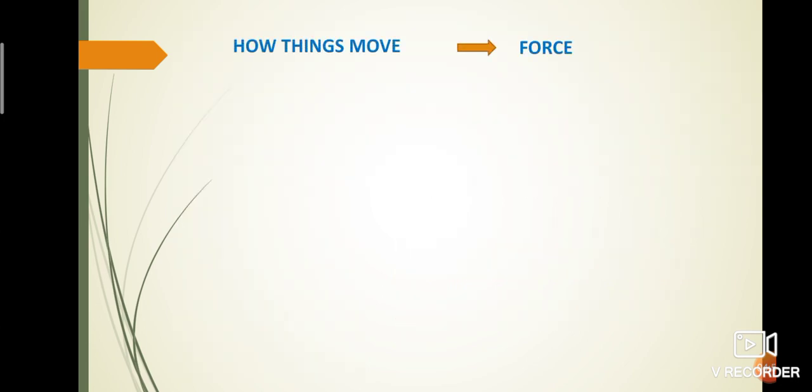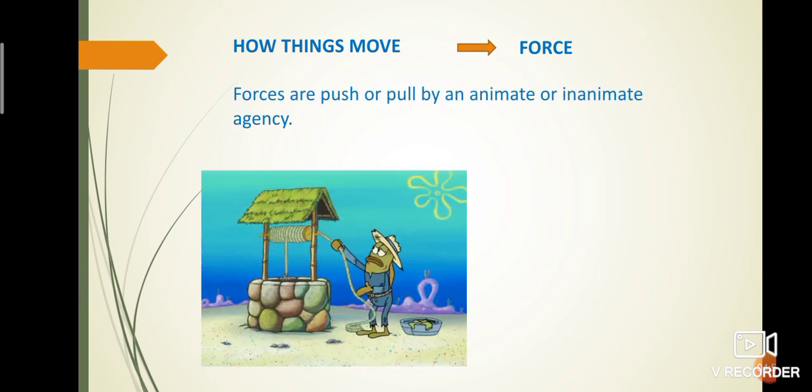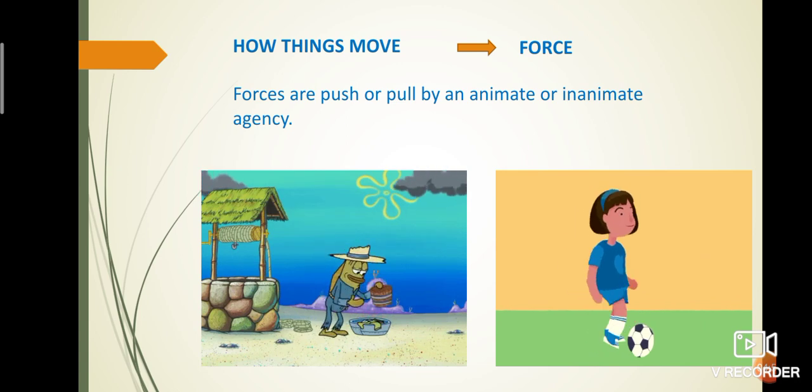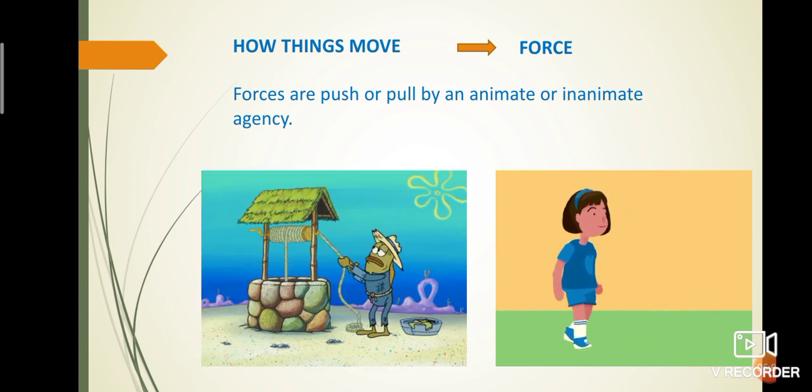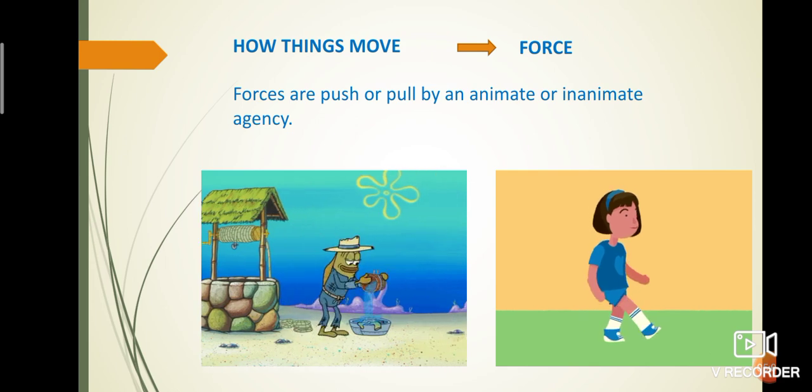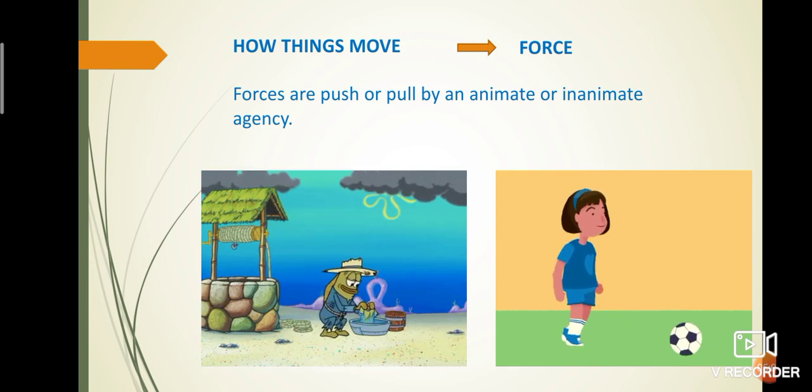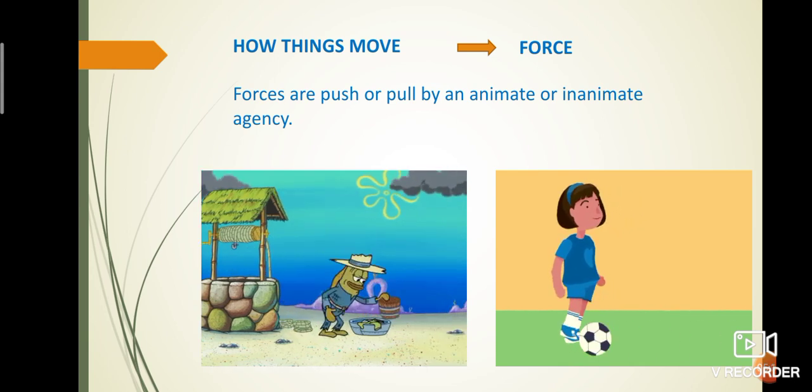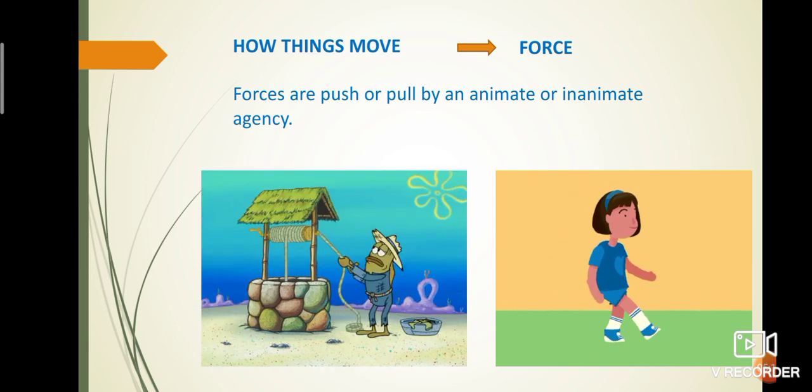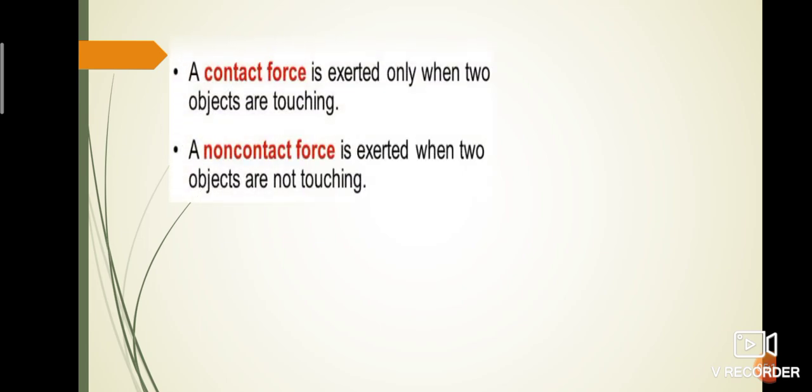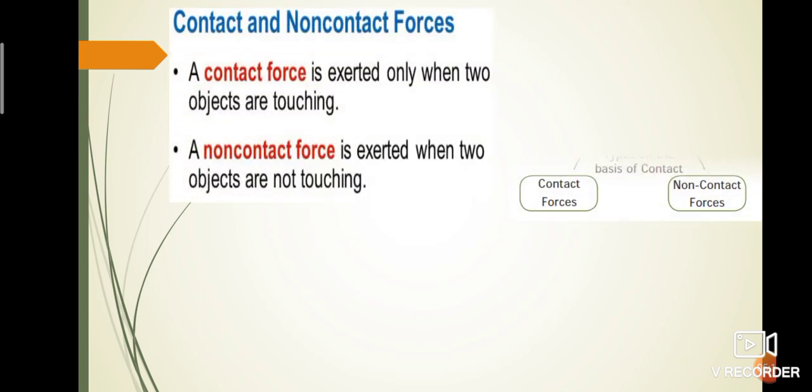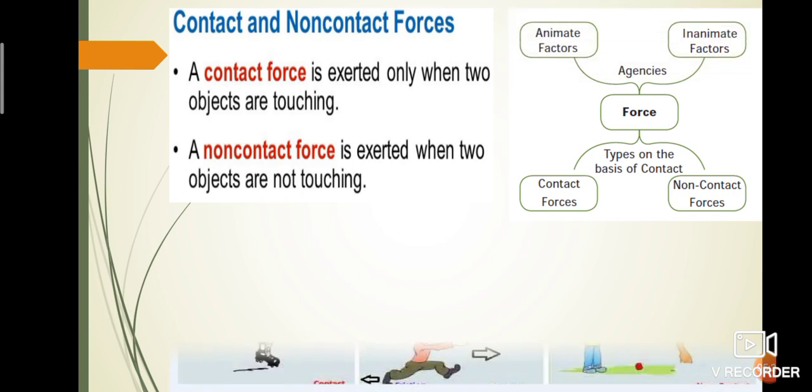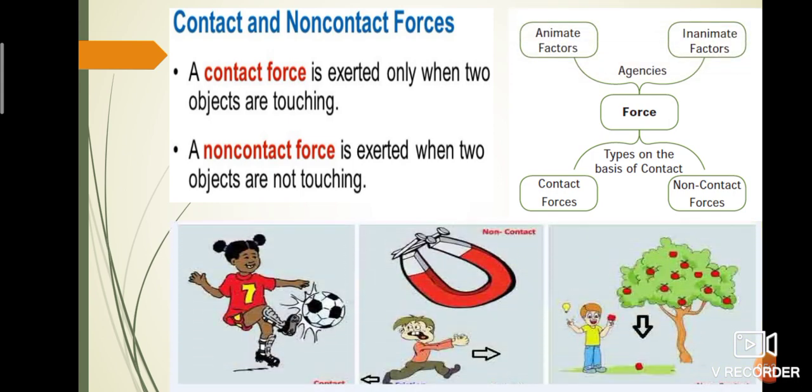How do things move? Because of force. Yes, forces are push or pull by an animate or inanimate agency. Example: in our daily life, pull out water from well. Push or kick a ball, it moves. So, a person using animate or inanimate agency to do a work is called force. The forces are classified into two types. One is contact force, another one is non-contact force. Here, the animate and inanimate factors induce force.